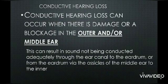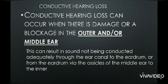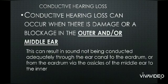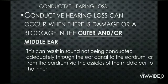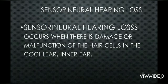First, we have conductive hearing loss. In one word, conductive hearing loss is basically concerned with the outer ear or middle ear. This kind of loss may be because of damage or blockage in the outer ear or middle ear, and it may cause issues with the transmission of sound from the canal to the auditory nerve and brain. So conductive hearing loss is all about the outer ear and middle ear.